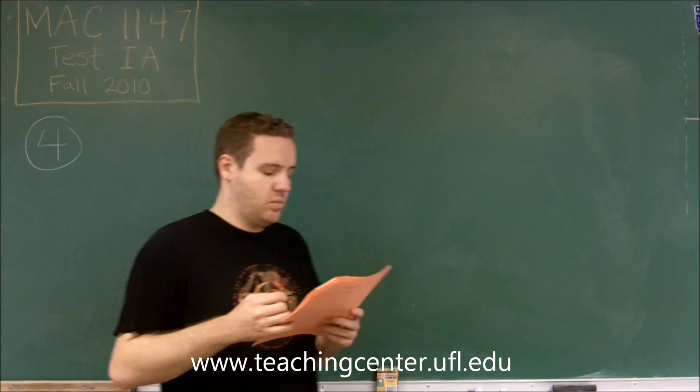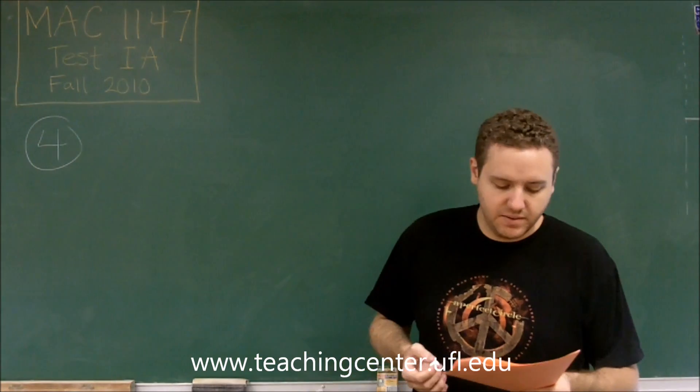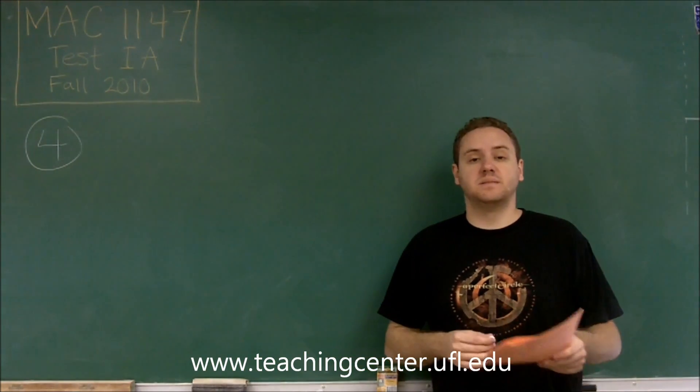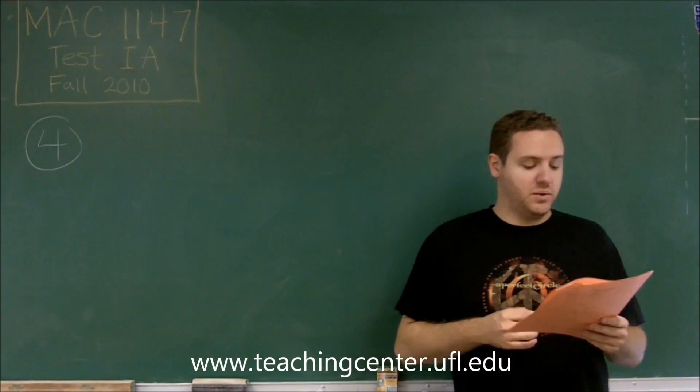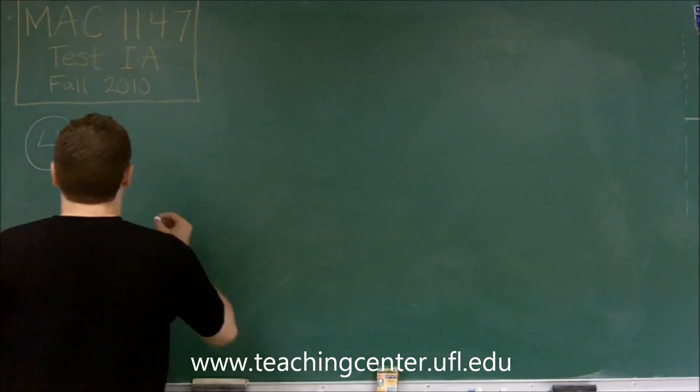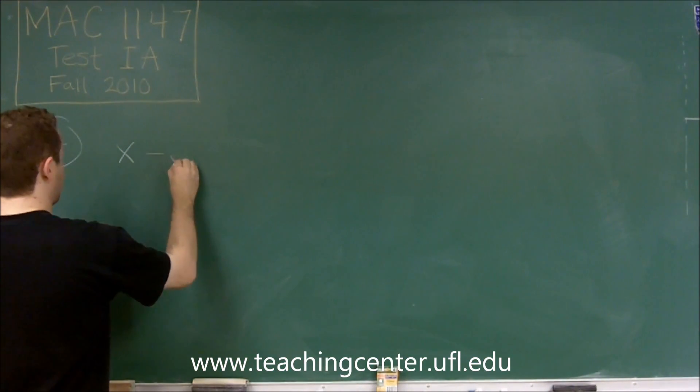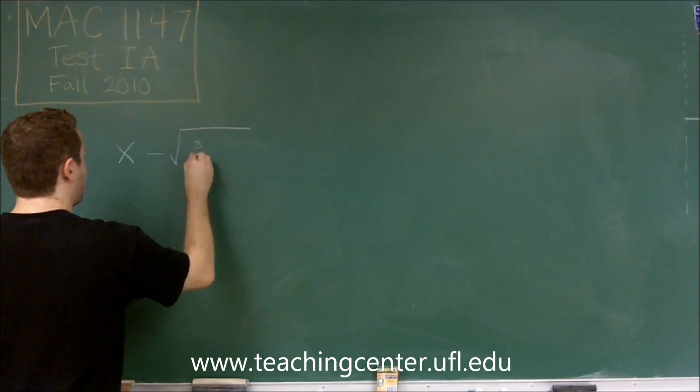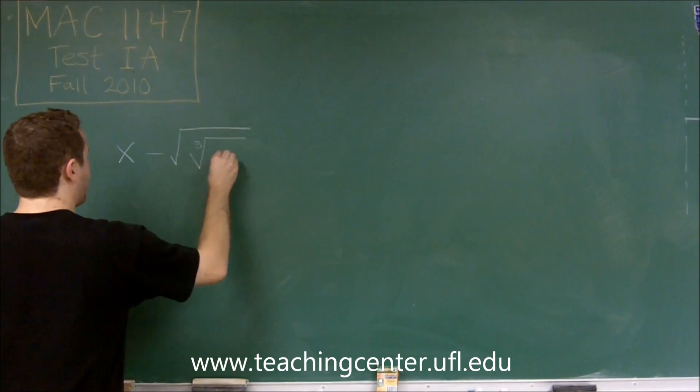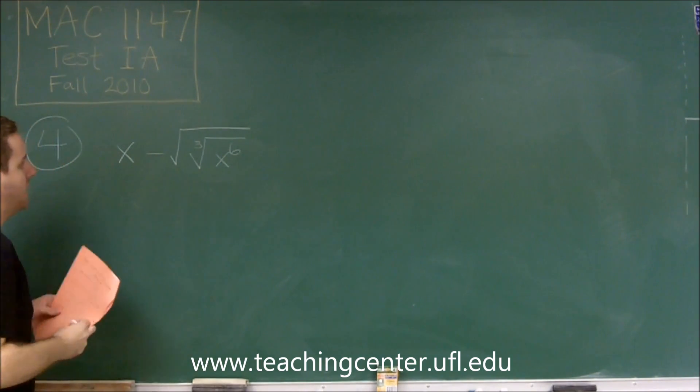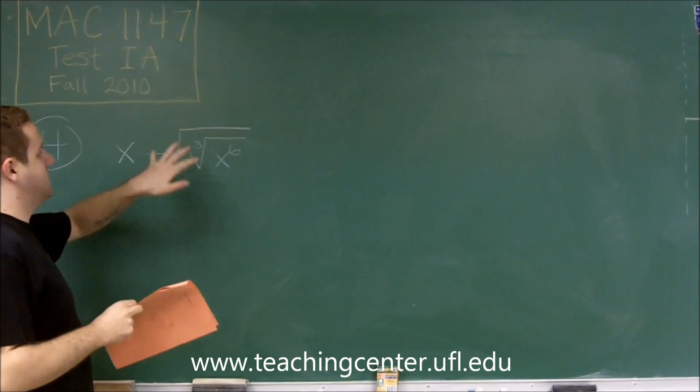Number 4, we're asked to simplify the following expression. So we have x minus, we have the cube root of x to the 6th, and then we're taking the square root of that.